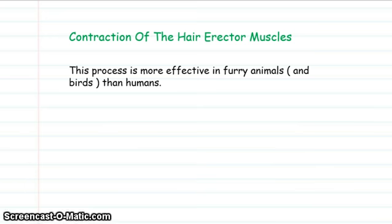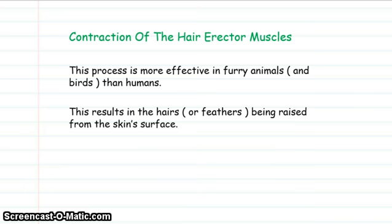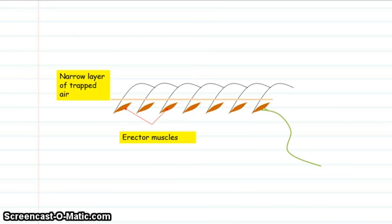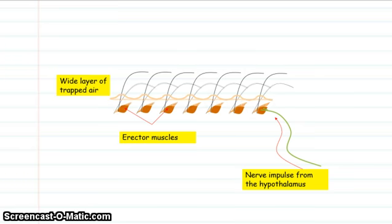Hair erector muscles — in our evolutionary past and in other hairy animals — were quite an efficient way of helping regulate body temperature, because they trap a layer of air between our skin and the external environment. This mechanism still exists in humans today. When we are warm, the hairs lie flat and the erector muscles of each hair remain relaxed, so very little air is trapped. If we get too cold, nerve impulses from the hypothalamus make those muscle cells contract, the hairs stand on end, and we see this as goosebumps.